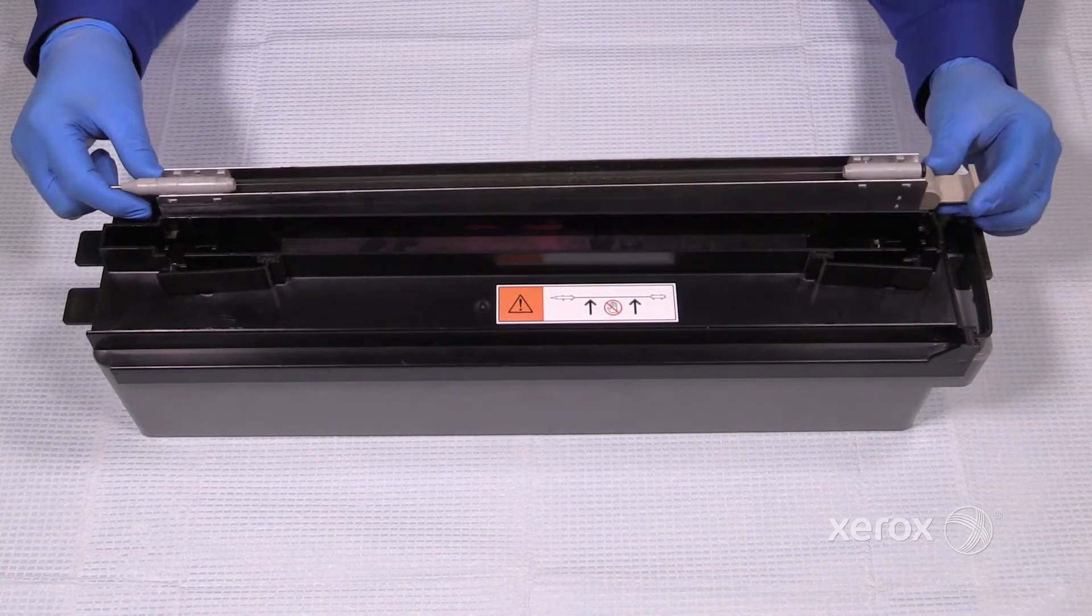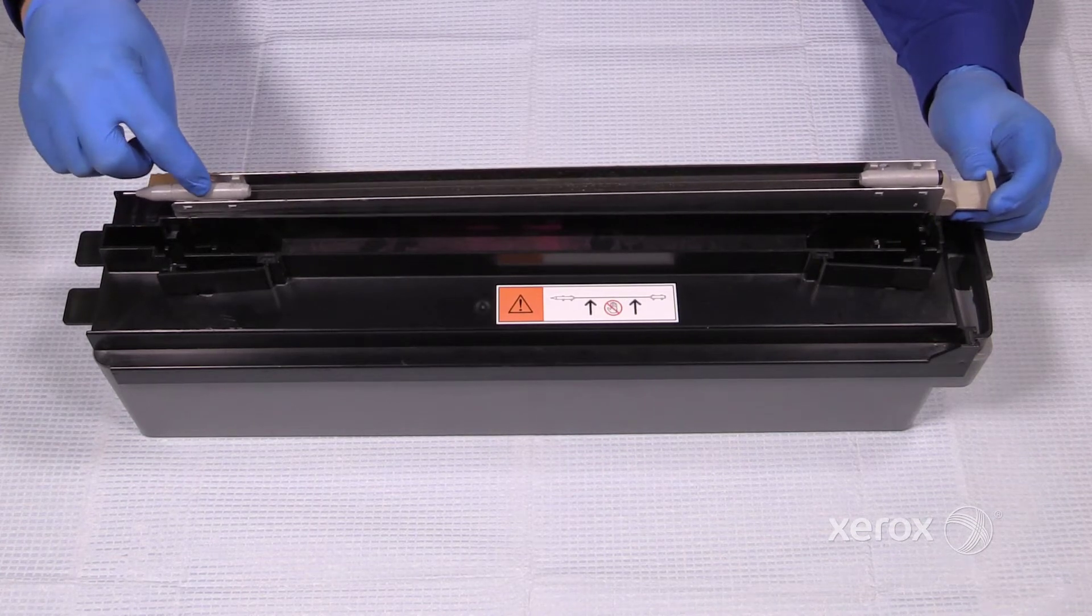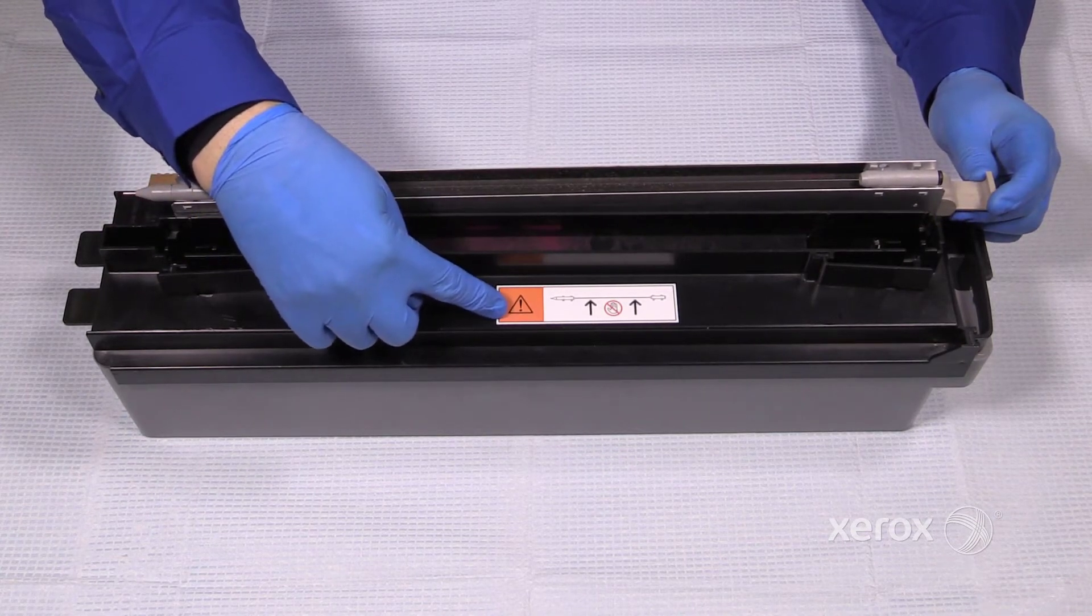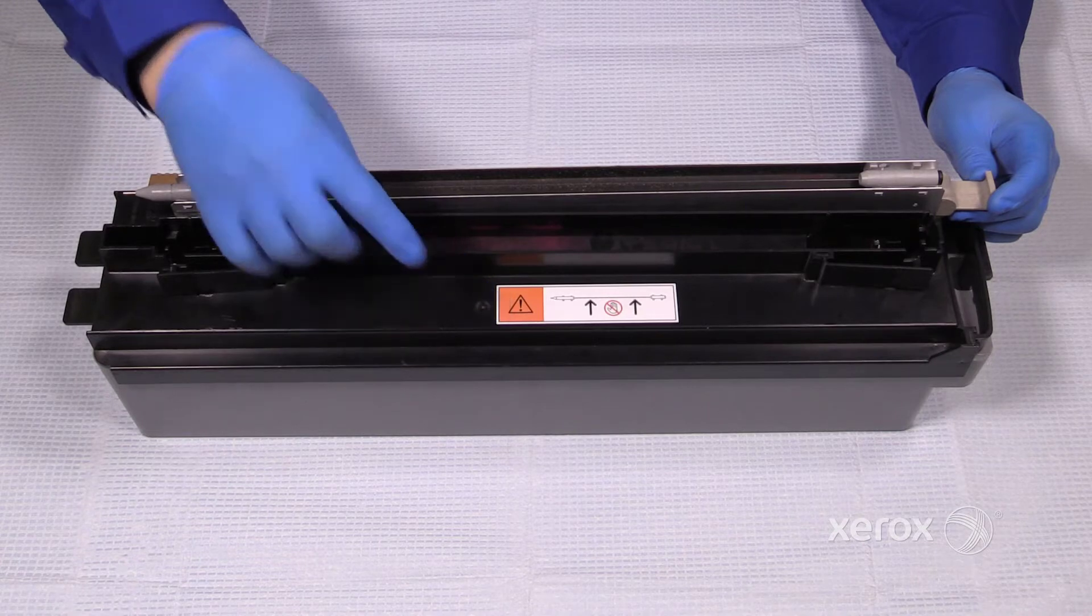First, remove the wire from the Dicor assembly by lining up the Dicor assembly with the decal located on the front of the waste box.